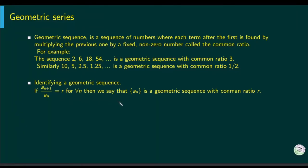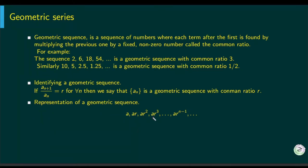We can represent any geometric sequence using a (first term) and r (common ratio). The terms are: a, ar, ar², ar³, and so on. To get the nth term, you multiply the first term by r to the power n minus 1, giving a·r^(n−1). This pattern defines a geometric sequence.